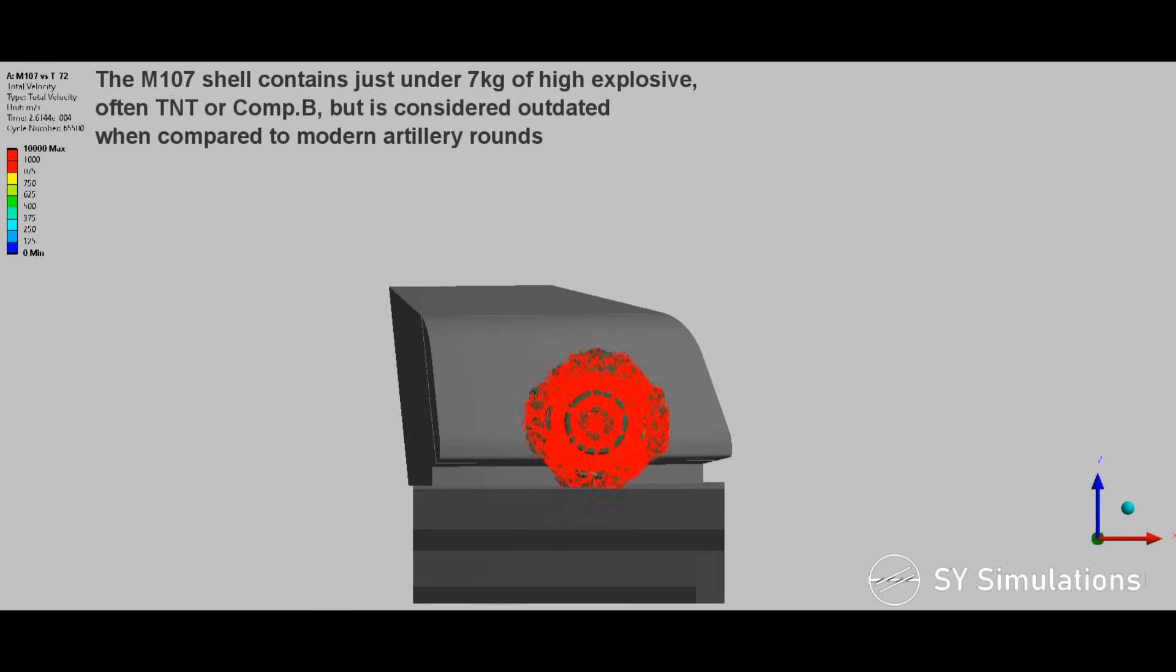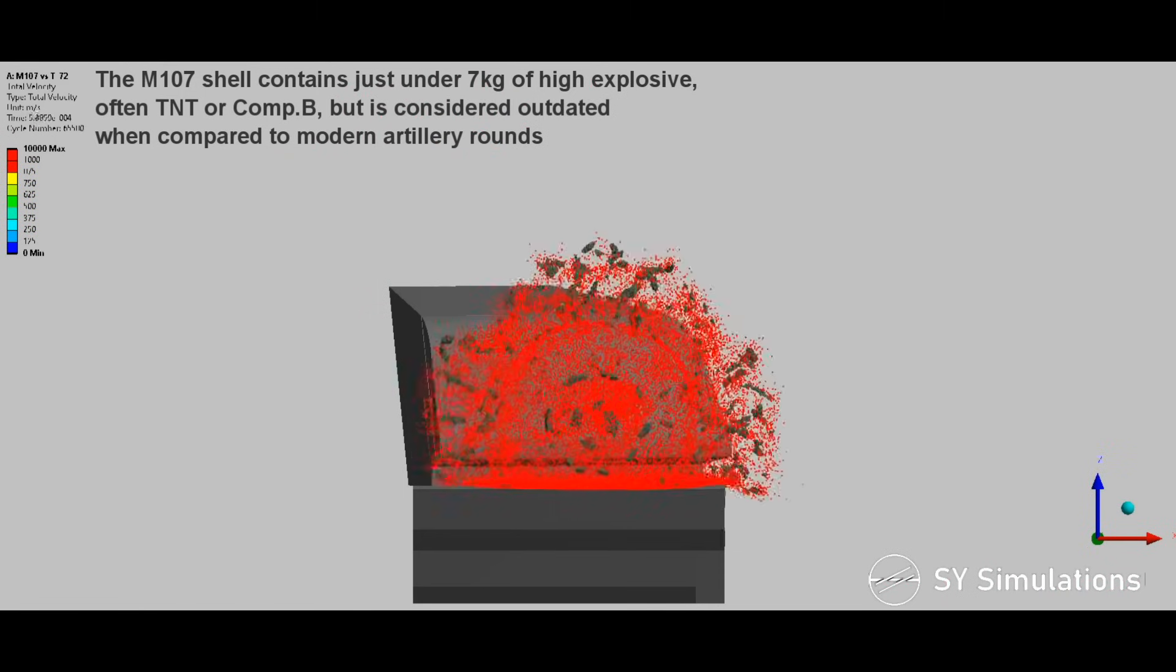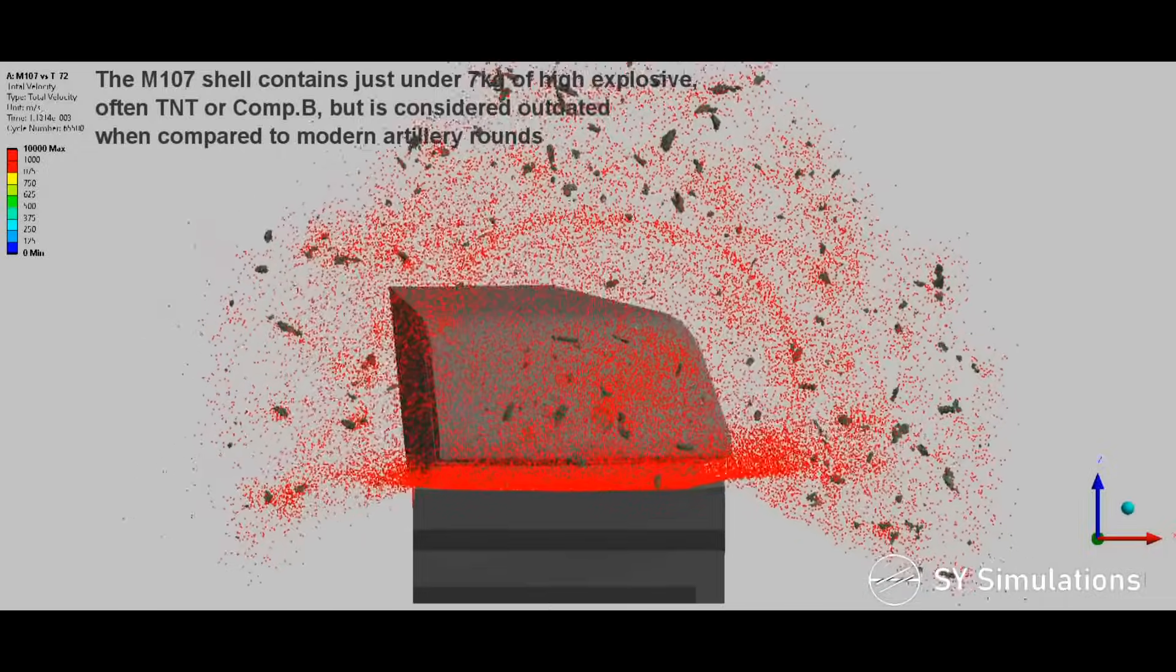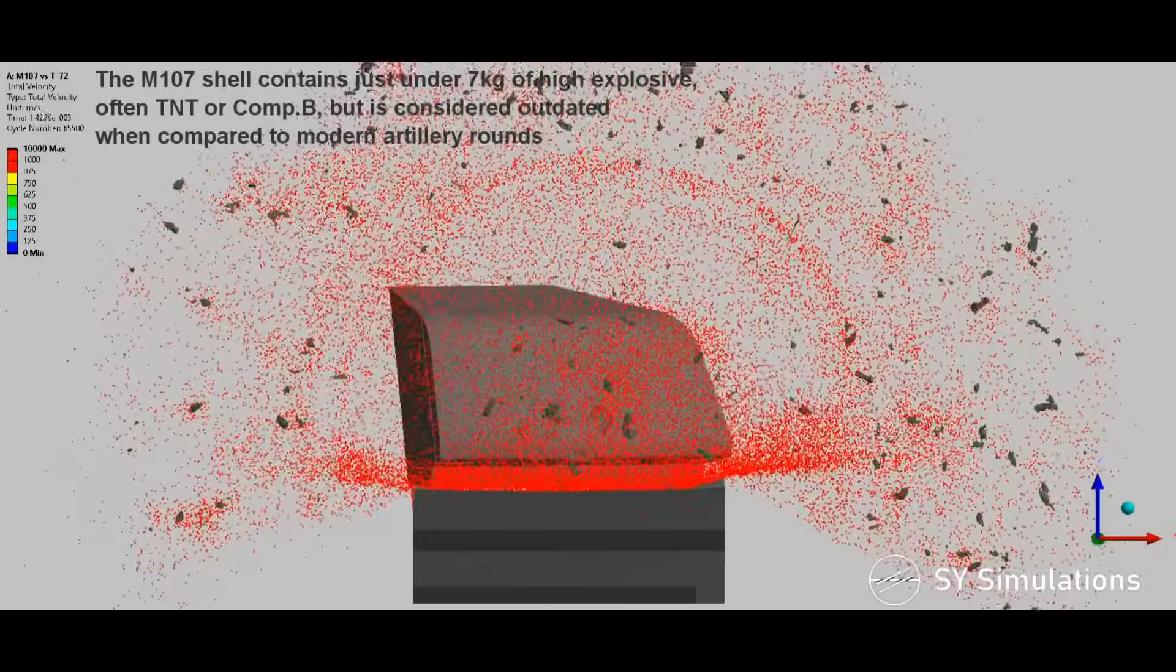The M107 shell contains just under 7kg of high explosive, often TNT or Composition B, but is considered outdated when compared to modern artillery rounds.